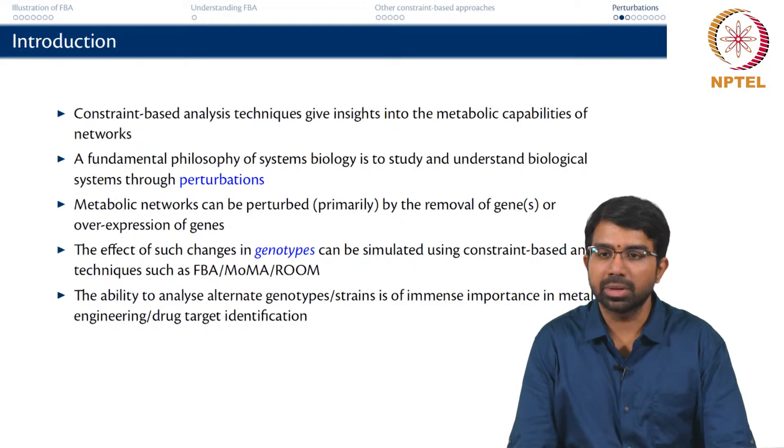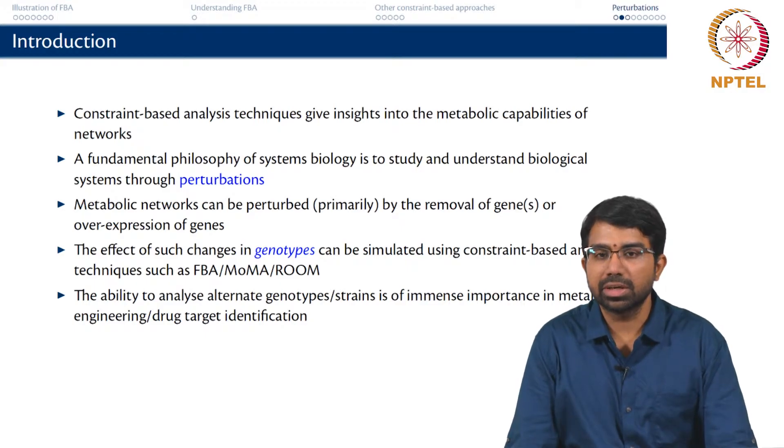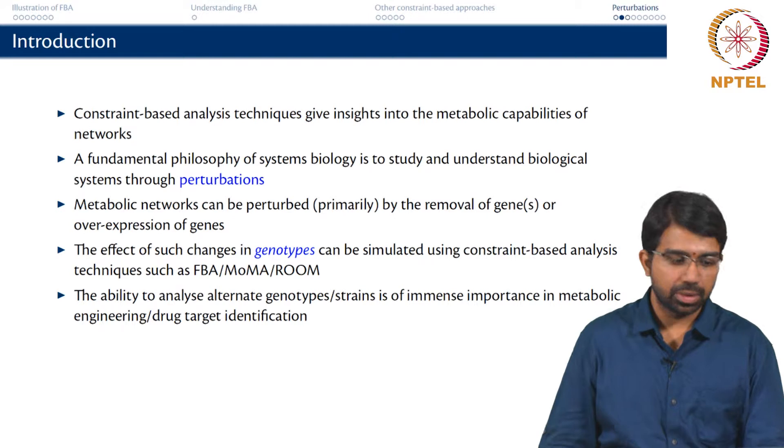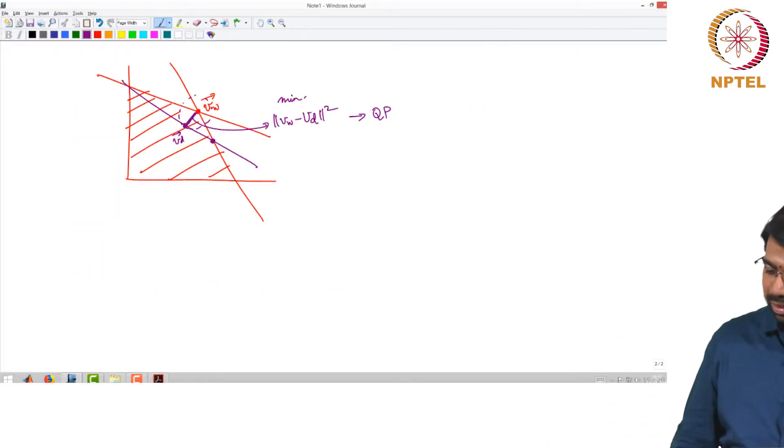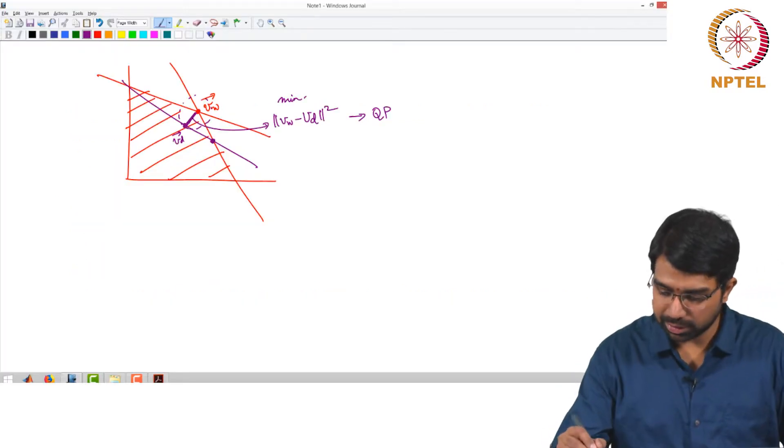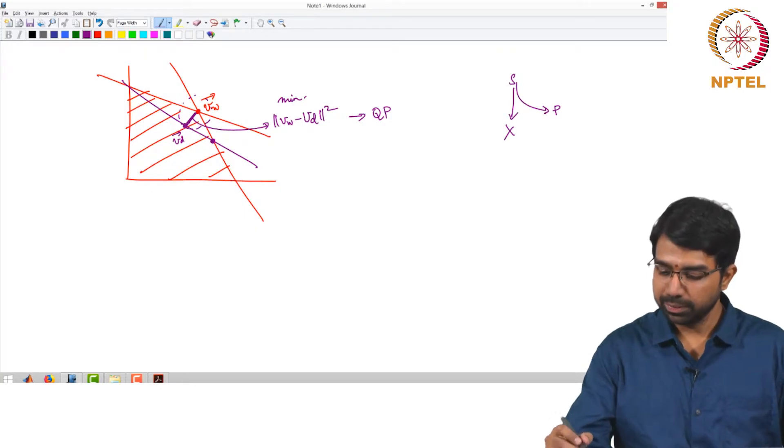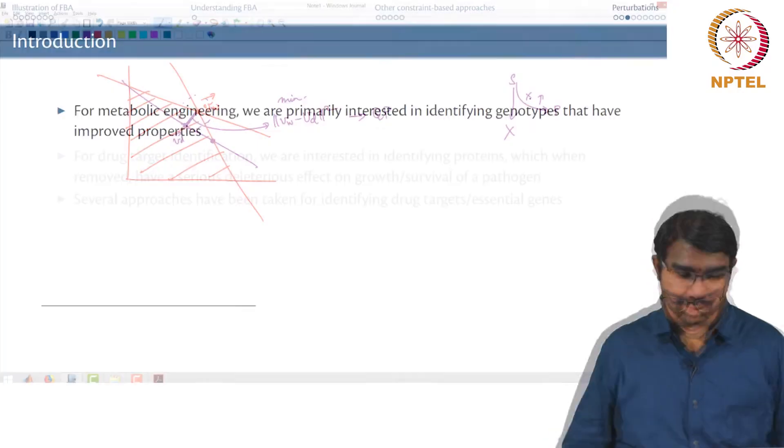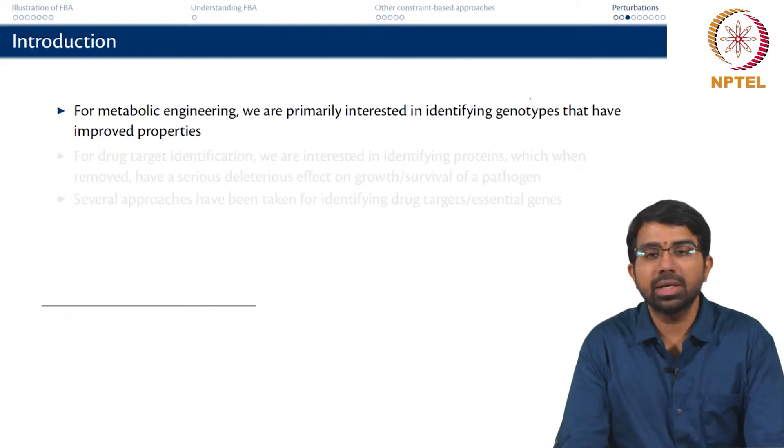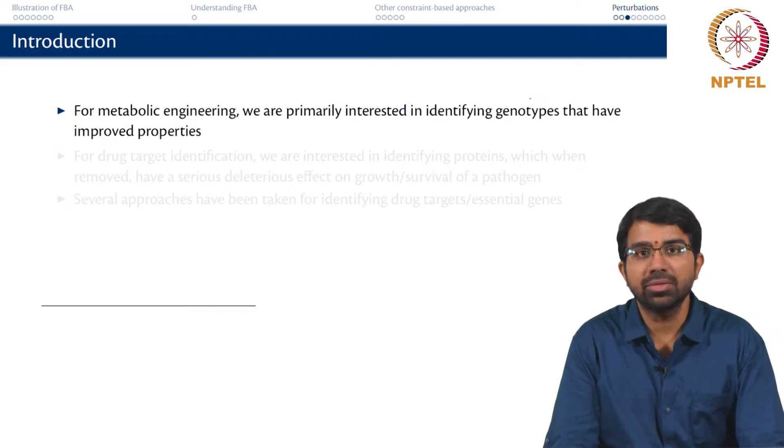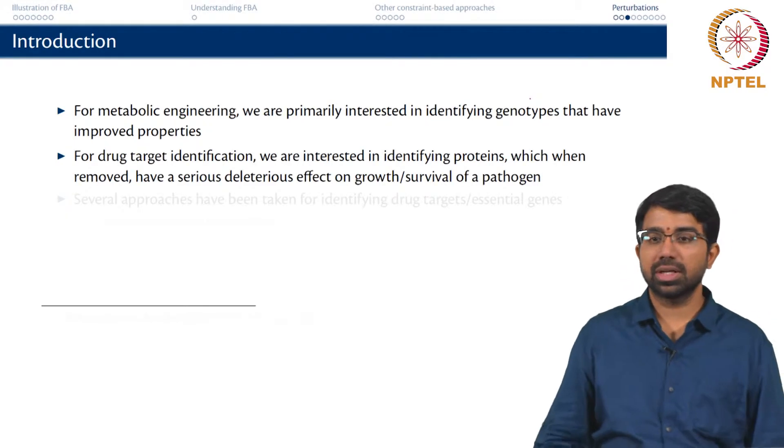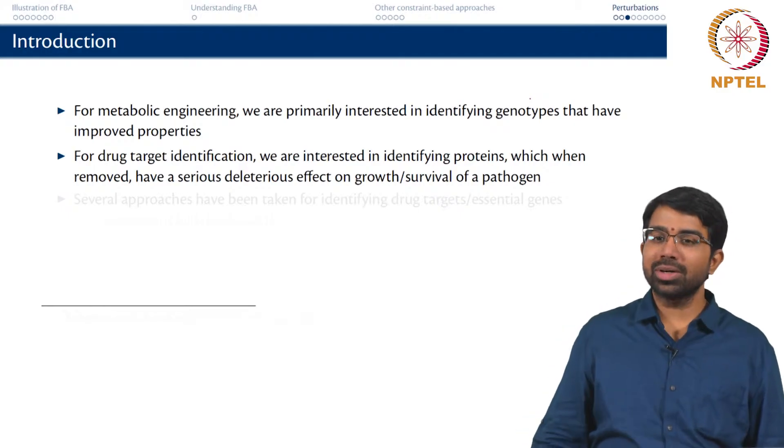This is a very commonly used technique wherein we try to see how to reroute. This is what the cell is trying to do and you want to reroute it towards this. Can you delete some genes, increase some genes? For metabolic engineering, we are primarily interested in identifying genotypes that have improved properties, whereas for drug target identification, we want the opposite. You want to identify phenotypes that are lethal.